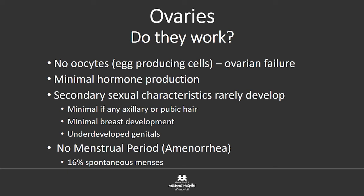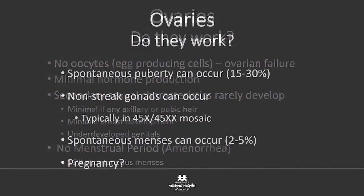What actually brings a lot of girls to diagnosis is that when they reach the age of puberty, they don't have a period. That's called primary amenorrhea, and it stems the workup that often leads to the Turner diagnosis. However, 16% of girls will have spontaneous menses from some hormone production — this is more common in the 46XX mosaic Turner kids. Spontaneous puberty, non-streak gonads, spontaneous menses, and even pregnancy can occur in the mosaic population.